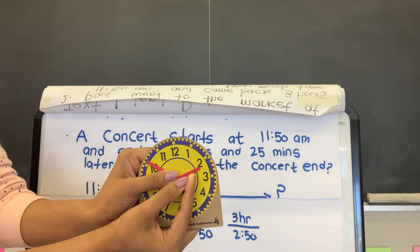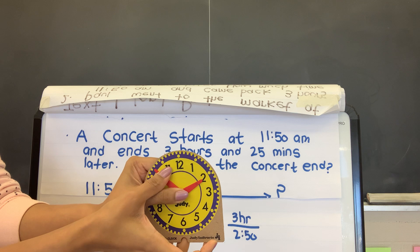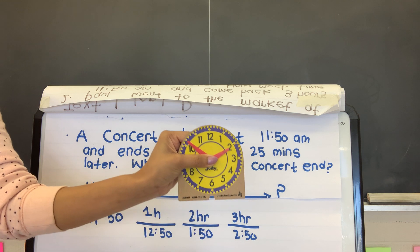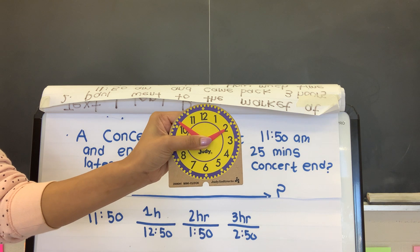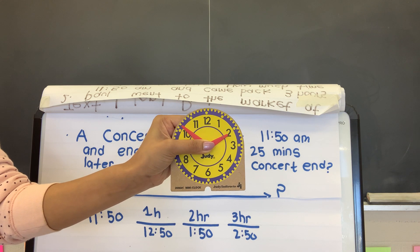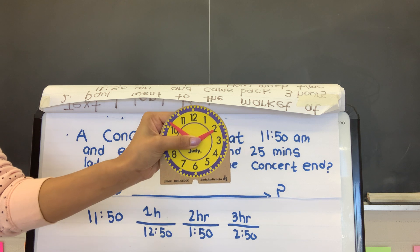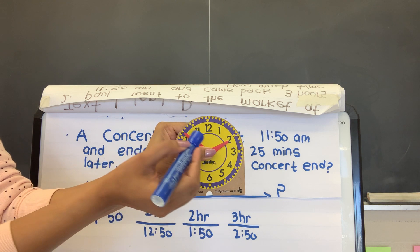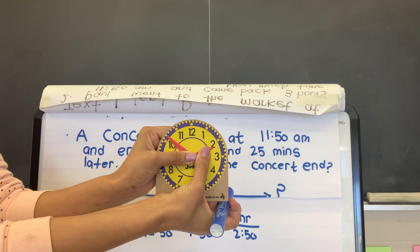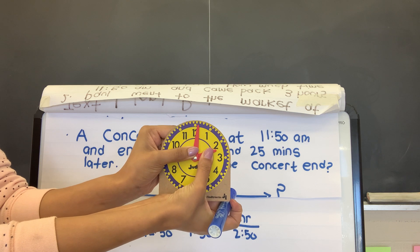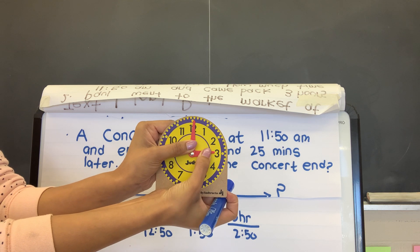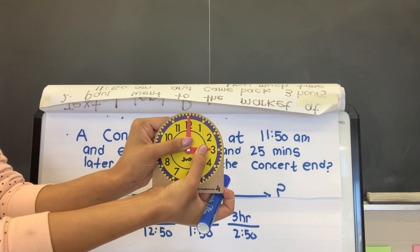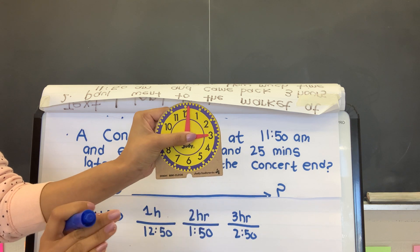I'm going to go back, I'm going to put my hands where they were before, so right at 2:50, and I need to count up 25 more minutes. However, I also need to remember that when the clock hits 12, when my minute hand hits 12, it is going to be 3 o'clock.